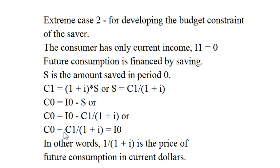Current consumption plus future consumption discounted equals current income. In this version of the budget constraint, 1/(1 + i) is the price of future consumption in current dollars.